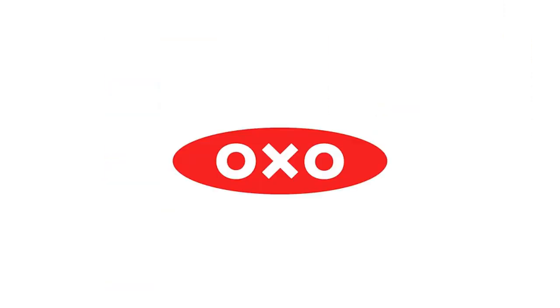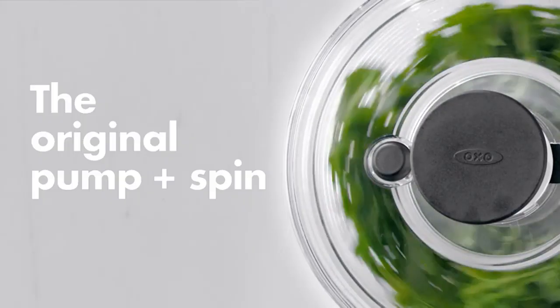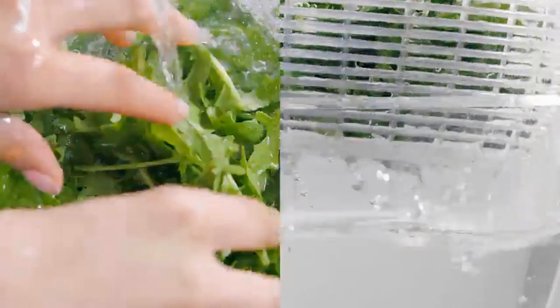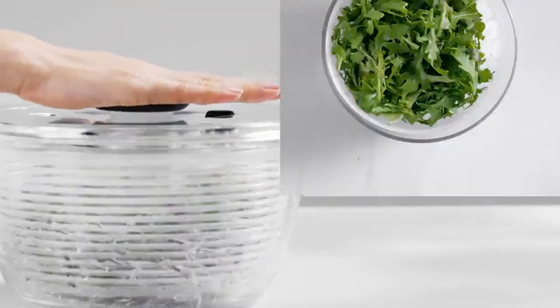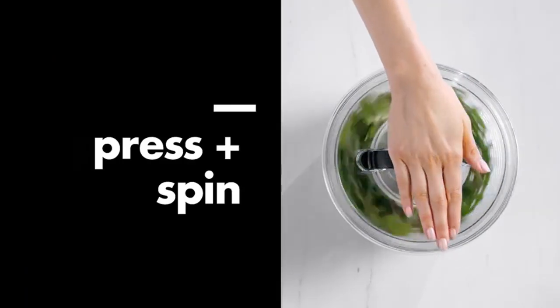The 4.95 quart basket capacity was ample to clean and dry a large head of romaine lettuce. After a soak in cold water for five minutes, our tester recorded it took only 10 easy pumps to completely remove dirt and thoroughly dry chopped romaine.